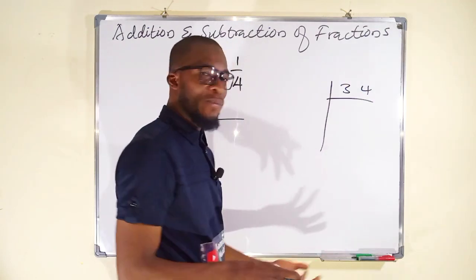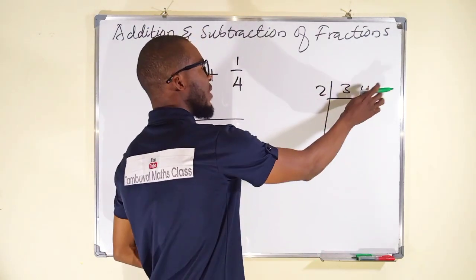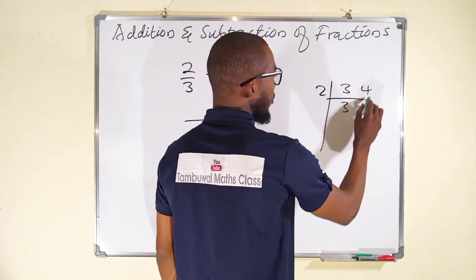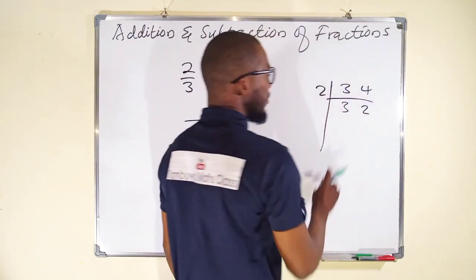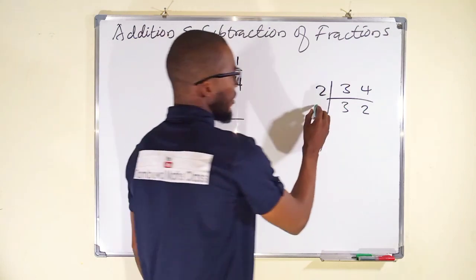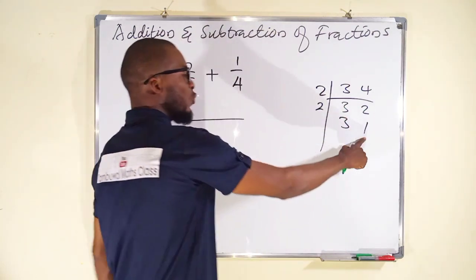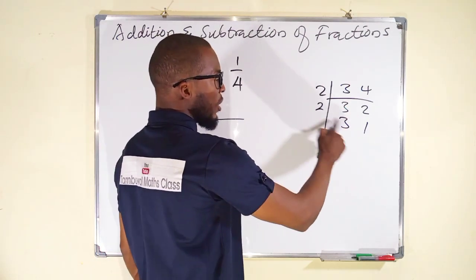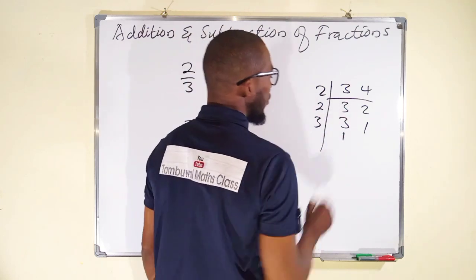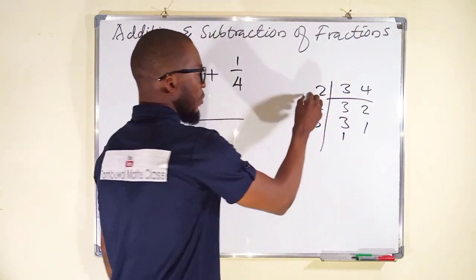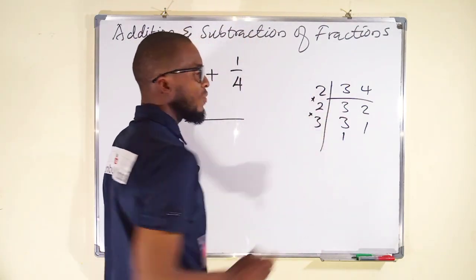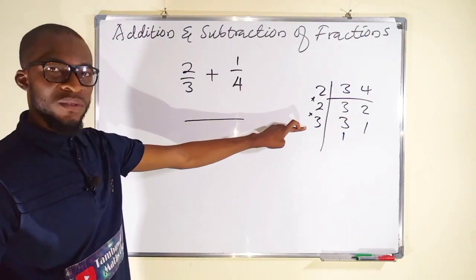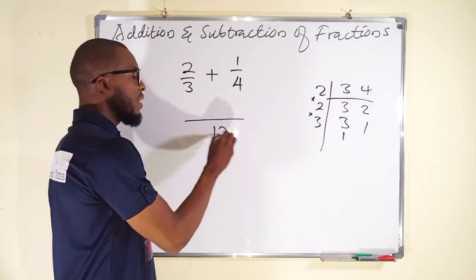2 cannot go into 3, but it can go into 4 two times, so we drop 3 down. We test 2 again — we have 3 and 1. Once you reach 1, you only have to test the other number. 2 cannot go into 3, so the next prime number is 3, and it can go into 3 one time. Multiply these numbers together to obtain your LCM: 2 times 2 is 4, times 3 is 12. So our LCM is 12.